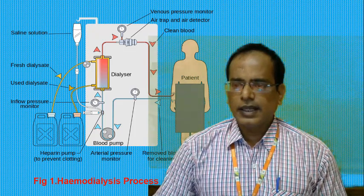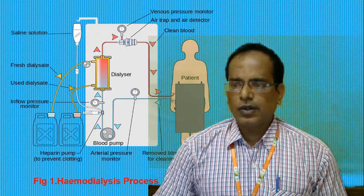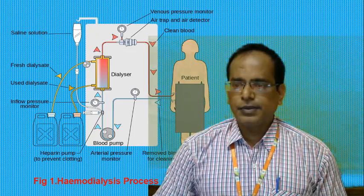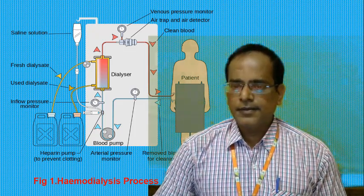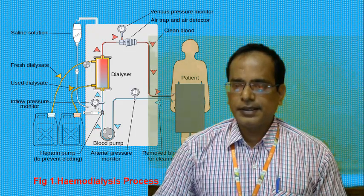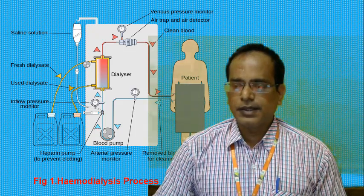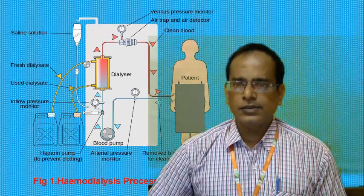An anti-coagulant is added to prevent clotting of the blood. The blood then passes through the dialysis membrane, which is equivalent to the kidney nephrons. Any gas bubbles are trapped and removed from the blood before the filtered blood is returned to the patient's radial vein.